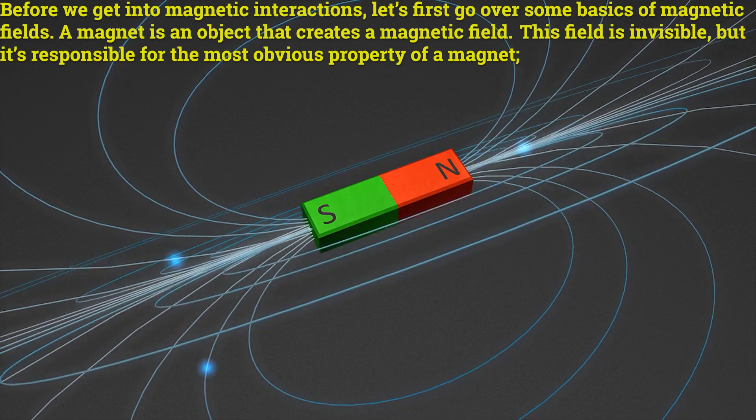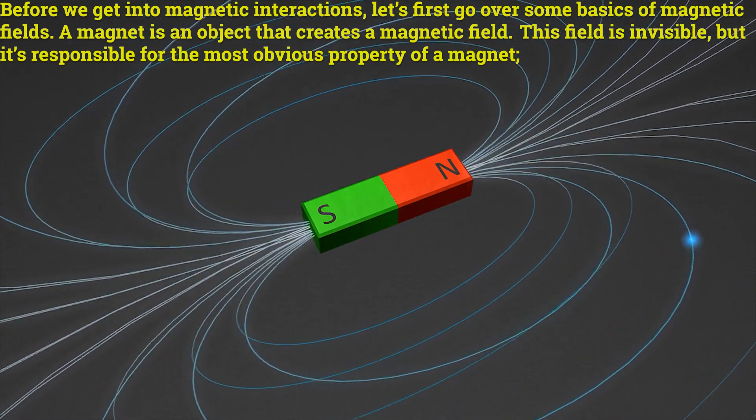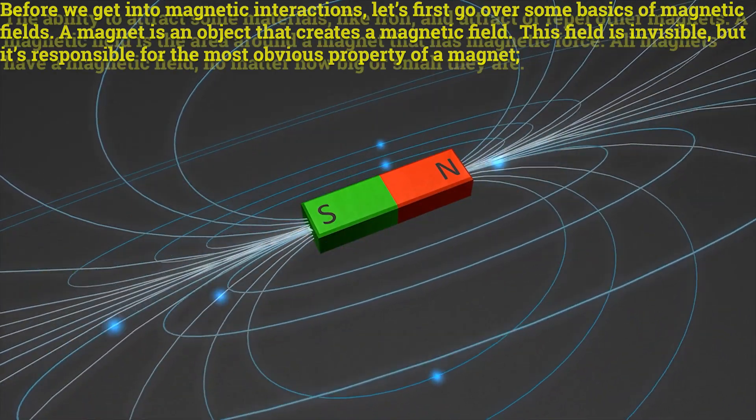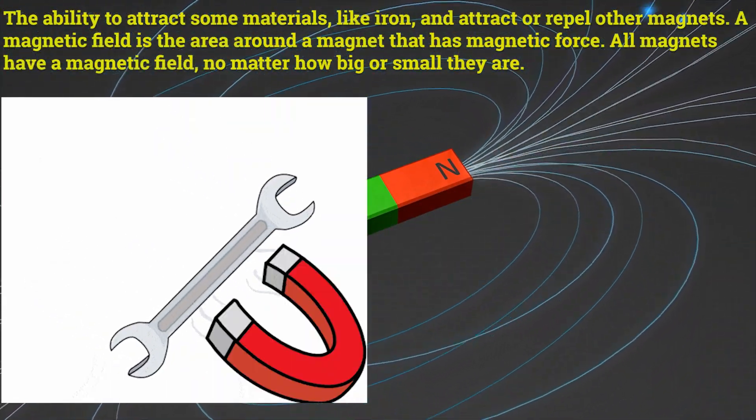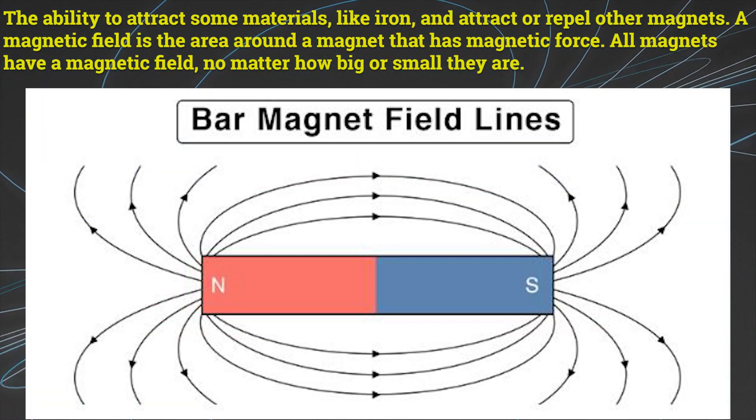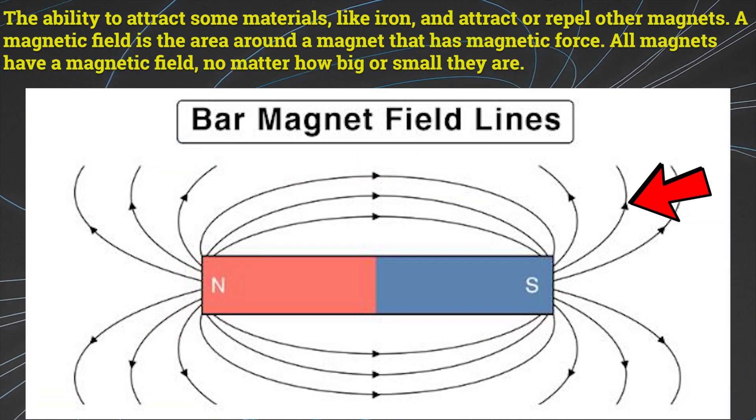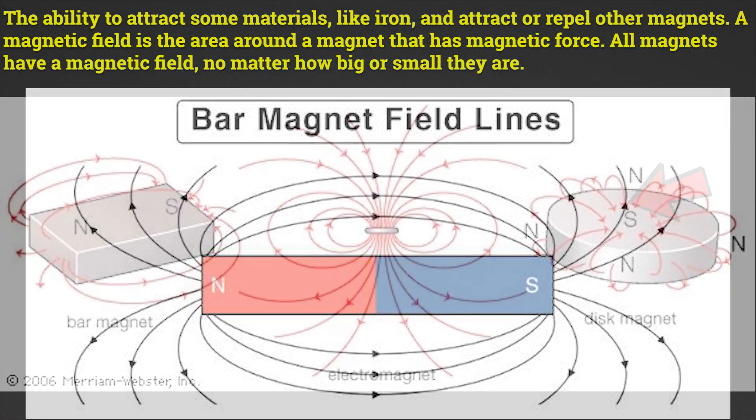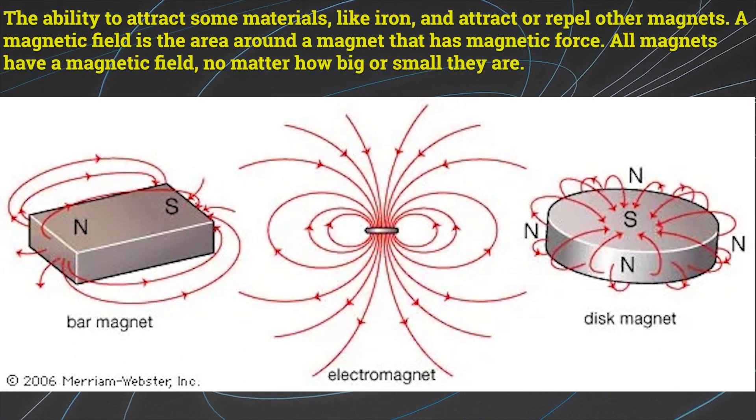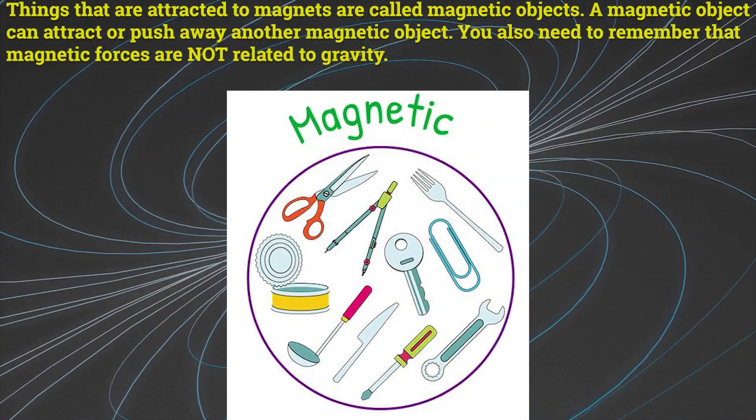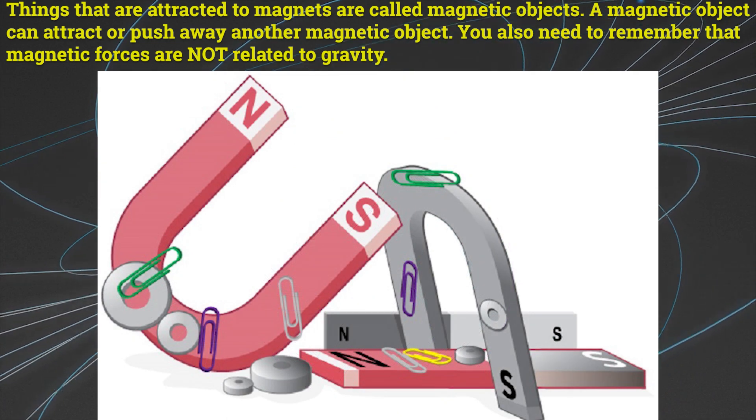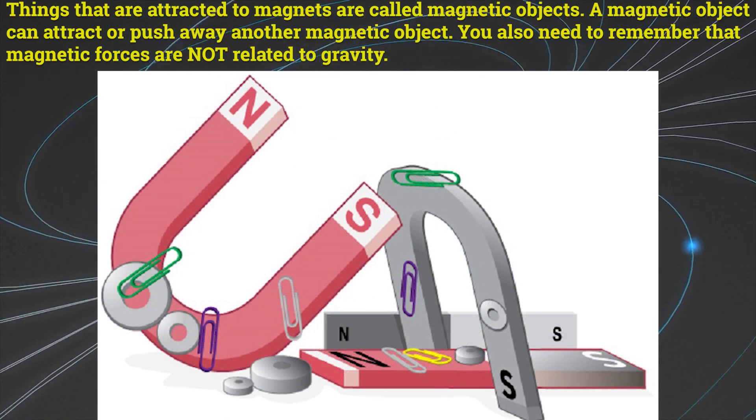A magnet is an object that creates a magnetic field. This field is invisible but it's responsible for the most obvious property of a magnet: the ability to attract some materials like iron and attract or repel other magnets. A magnetic field is the area around a magnet that has magnetic force. All magnets have a magnetic field no matter how big or small they are. Things that are attracted to magnets are called magnetic objects. A magnetic object can attract or push away another magnetic object.